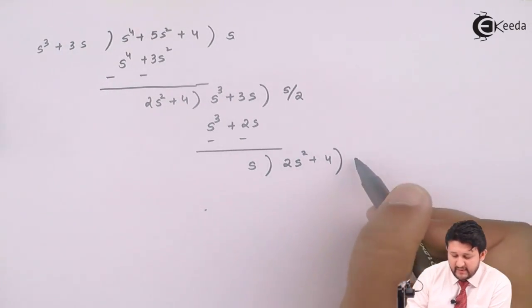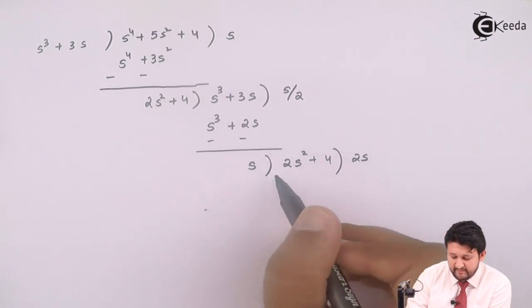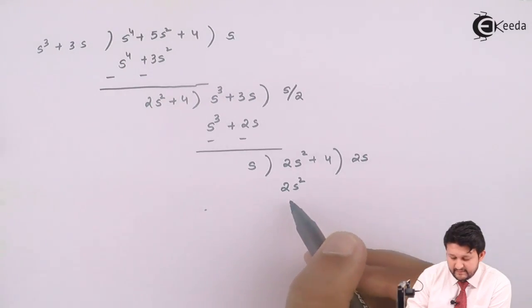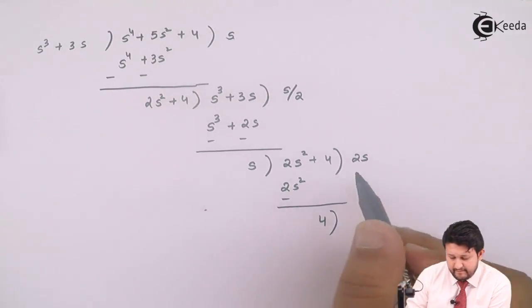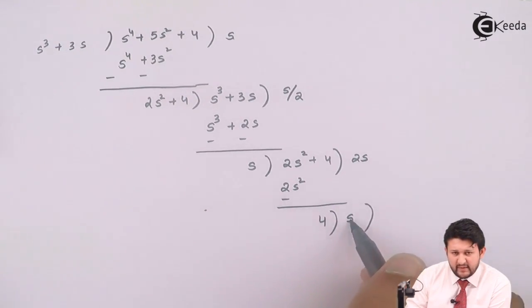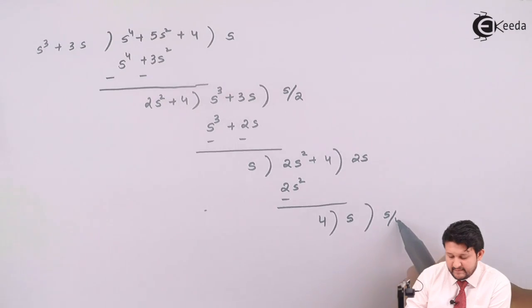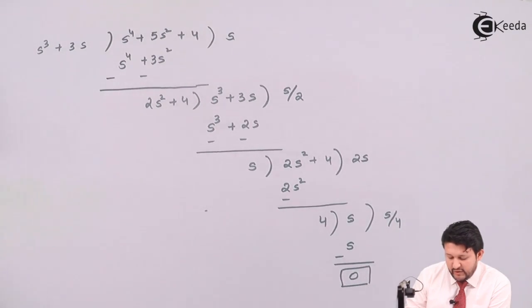Divide the highest term over here by the highest term here. Multiply this with this. Shift. Both of them are one, one. Multiply this with this. So you need to divide till the time you get the final value.